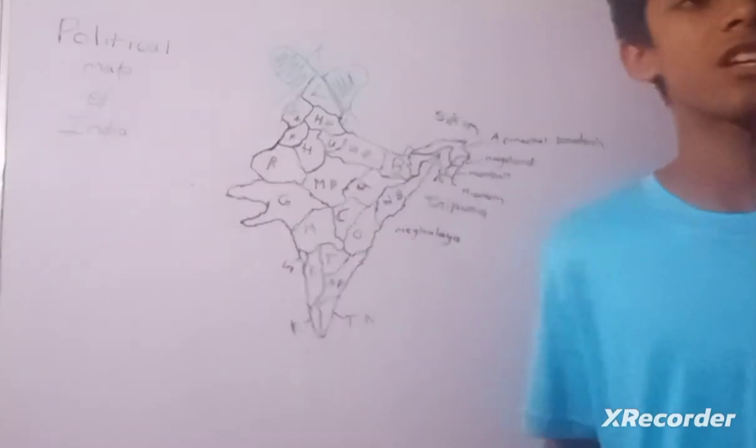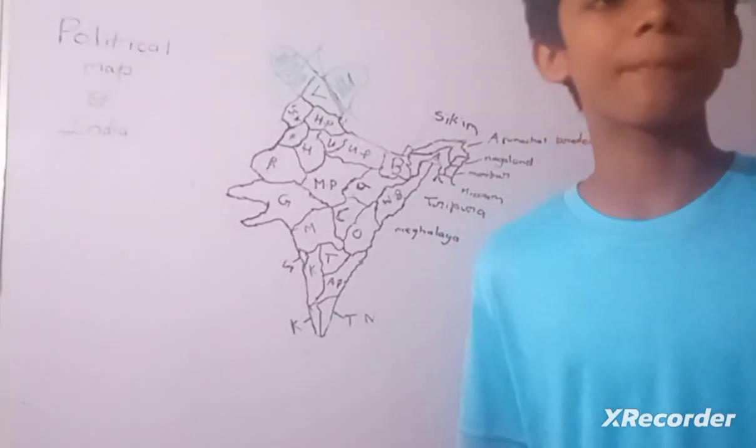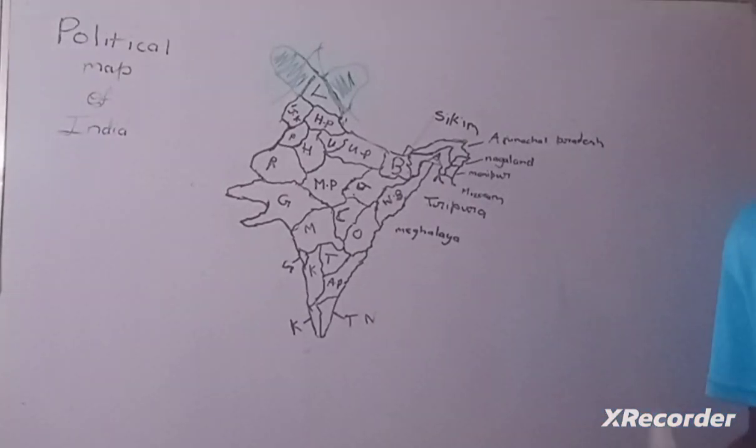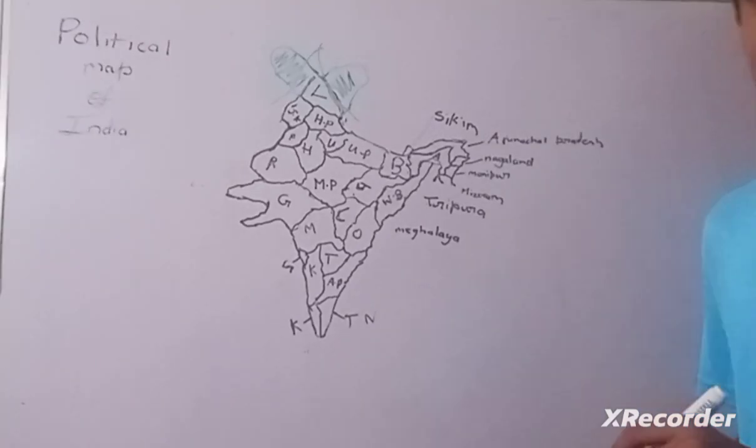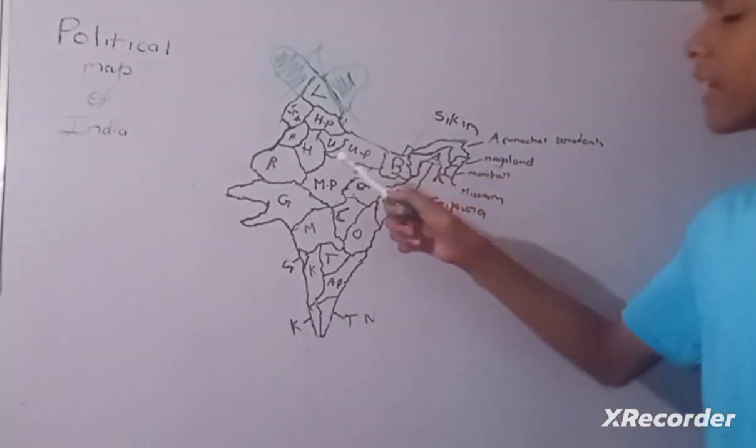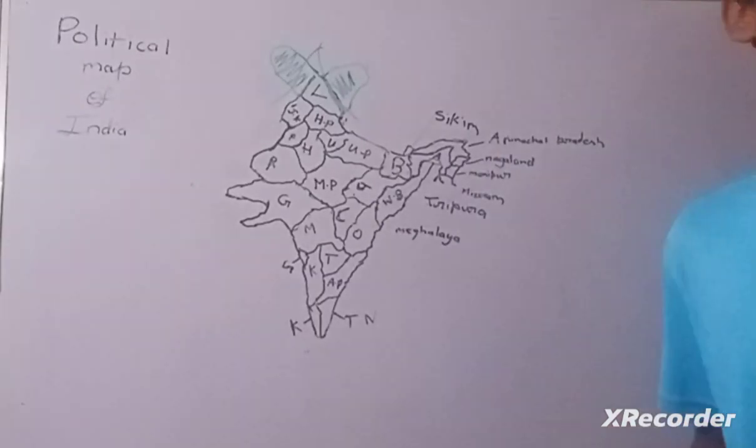Now Punjab. Punjab is famous for its agriculture and its capital is Chandigarh.